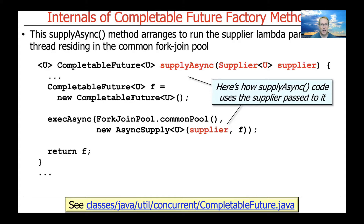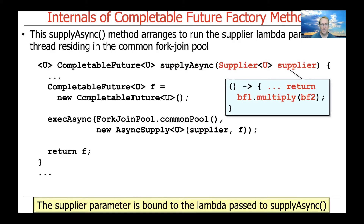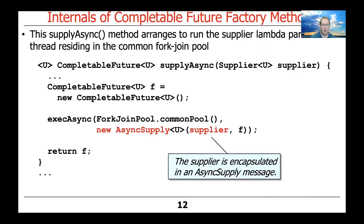What happens is the supplier — that lambda expression we showed earlier — gets passed in as a supplier parameter to supplyAsync. You can see that parameter is then bundled up inside a new instance of a helper class internal to the CompletableFutures framework called AsyncSupply. So we take that supplier parameter containing all that multiplication logic, and that supplier lambda is bound to the supplier parameter received by supplyAsync, and then encapsulated in an AsyncSupply message.